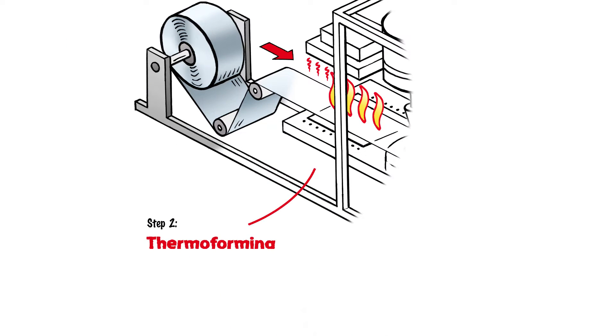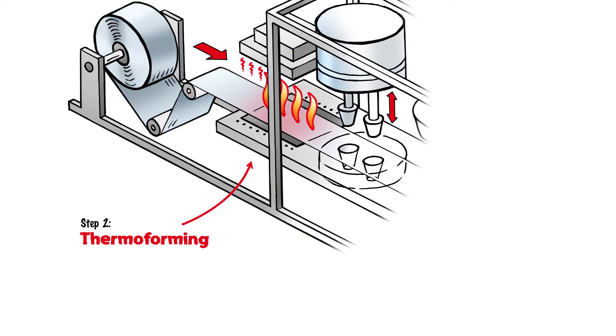Step 2: Thermoforming. First, the film is gently preheated with the help of a heating element. When the film has been heated, it is formed by the tool.